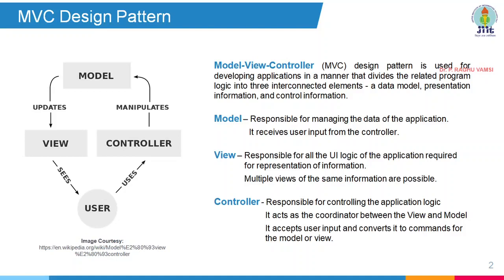MVC is especially suited for 3-tier architectures. In the first tier you find the view, in the middle tier you find the business logic, and in the third tier you find the database. The MVC design pattern develops applications by dividing the related program logic into three interconnected elements: a data model, presentation information, and control information.